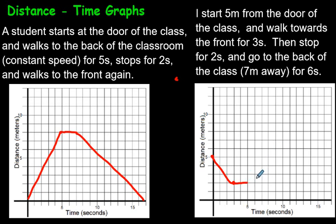Then go to the back of the class, which is seven meters away, for six seconds. Let's count the seconds. One, two, three, four, five, six. And it's seven meters away from, we don't know from where. Let's assume seven meters away from where we are now. So, one, two, three, four, five, six, seven. And let's assume it's a constant speed, so it's a straight line. If this was the case, the class would be nine meters big, from front to back. Let's go on to the next one.